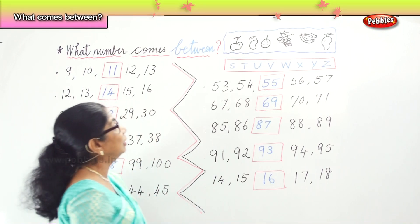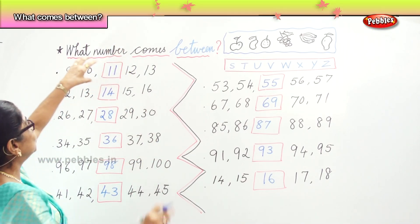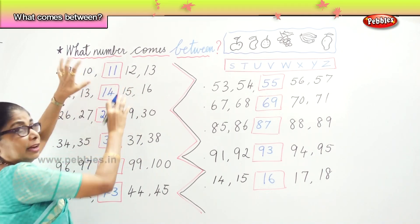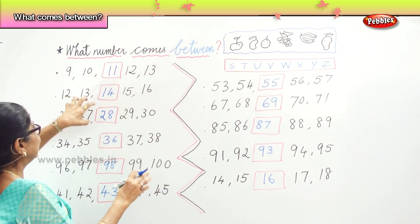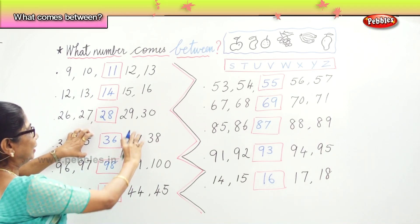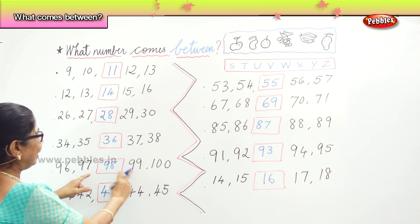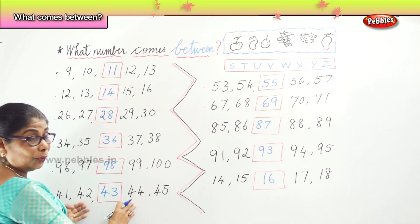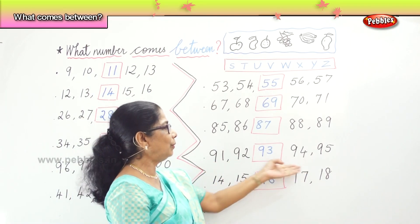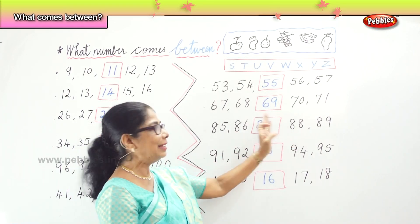We learnt to write what number comes between. Review: 10 and 12 — answer 11. 13 and 15 — answer 14. 27 and 29 — answer 28. 35 and 37 — answer 36. 97 and 99 — answer 98. 42 and 44 — answer 43. 92 and 94 — answer 93. 86 and 88 — answer 87.